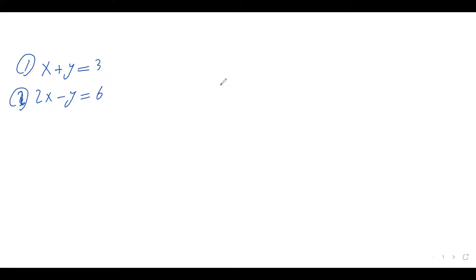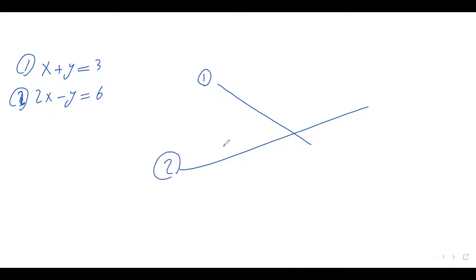So let's say this is my first line — line one — and this is my second line. By solving this linear system, we are trying to find the coordinate of the point of intersection between these two lines — this point of intersection. So that's the meaning of solving a linear system.